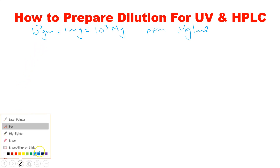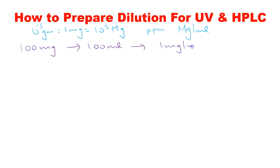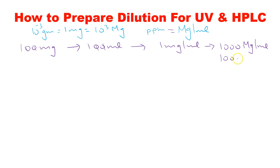First we need to prepare a stock solution. For 1000 ppm stock solution, we dissolve 100 milligrams in 100 mL of solvent. This gives a solution of 1 milligram per mL — the zeros cancel out. And since 1 milligram is equivalent to 1000 micrograms, the solution becomes 1000 micrograms per mL.